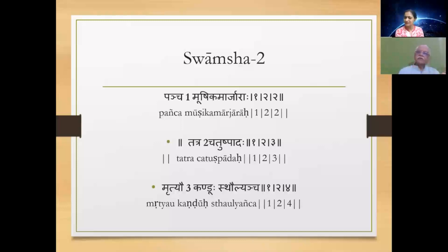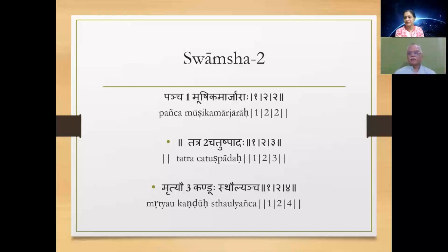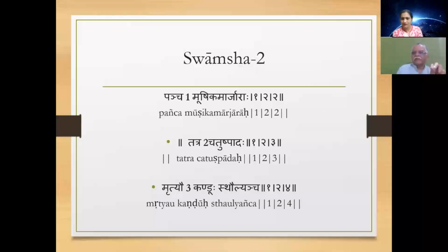It starts with 'Pancha Mushika Marjara.' Pancha converted into Katapayadi means one, so this is the first Rashi which is Mesha — Aries. It can also mean if he is in the Navamsha Lagna itself. Atma Karaka placed in Mesha Navamsha indicates: Mushika is rat and Marjara is cat. So it is assumed that it indicates trouble from cats and rats.